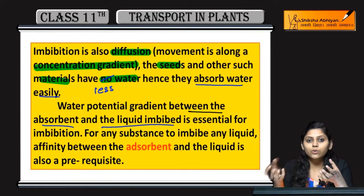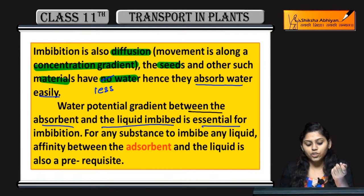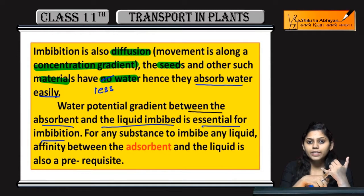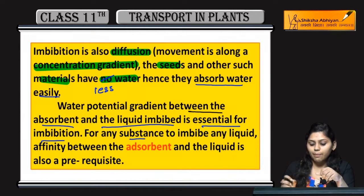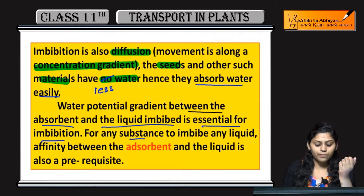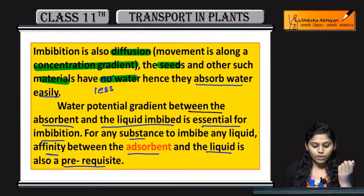Water potential gradient between the absorbent — jo absorb karta hai — and the liquid imbibed, woh essential hai for imbibation. Imbibation ke liye absorbent aur liquid dono ka hona zaroori hai. Kisi bhi substance ko imbib karne ke liye unki affinity hona bahut zaroori hai adsorbent ke saath, and the liquid is also a prerequisite.